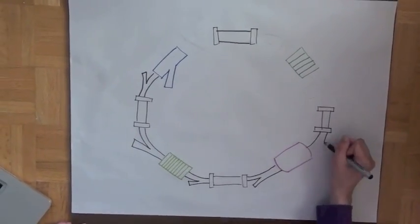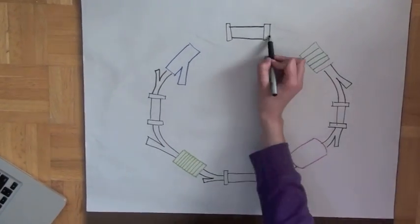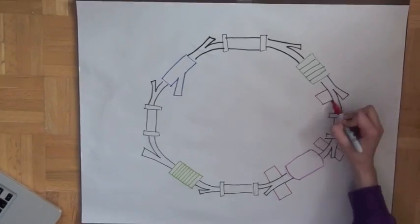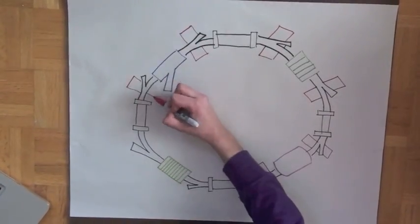Once in the storage ring, the electrons will circulate for 4 to 12 hours producing photons every time the 6,800 kilogram dipole magnets change the direction of the flow of the electrons.